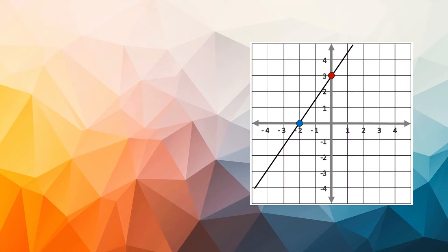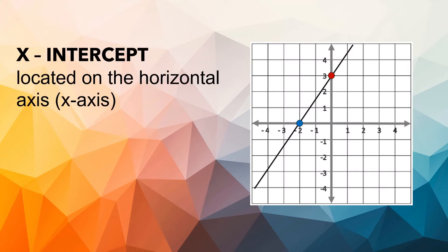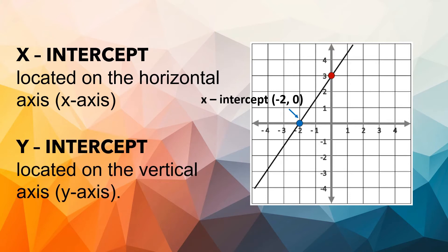For example, we have these two points on the graph. The x-intercept is located on the horizontal axis or the x-axis. In our example, it has the coordinates of negative 2 and 0. While for the y-intercept, it is located on the vertical axis or the y-axis. In our example, it has the coordinates of 0 and positive 3.